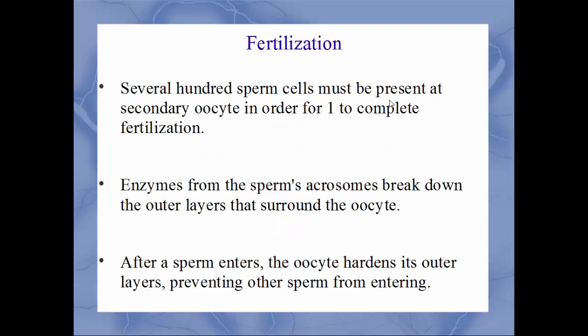There have to be several hundred sperm cells present at the secondary oocyte for one to actually complete fertilization. If you remember the structure of a sperm cell, they have a little cap on the very end of their headpiece called an acrosome. In these acrosomes, you have digestive enzymes that will break through the outer layer of the egg. You can think of one sperm cell as almost like a little Pac-Man, each eating away a little bit at a time until finally one is able to break all the way through.